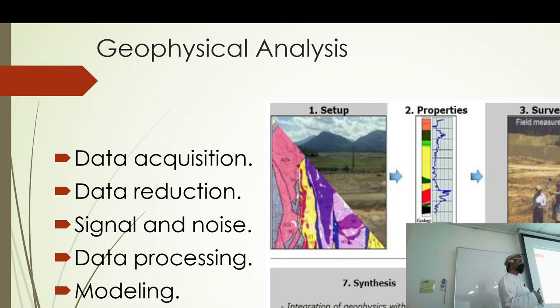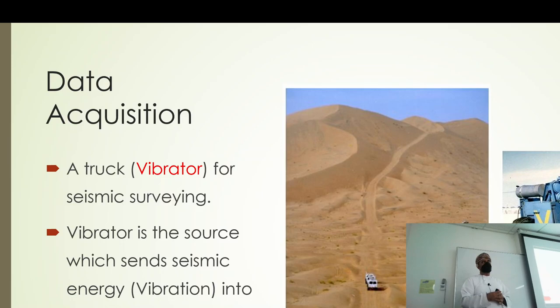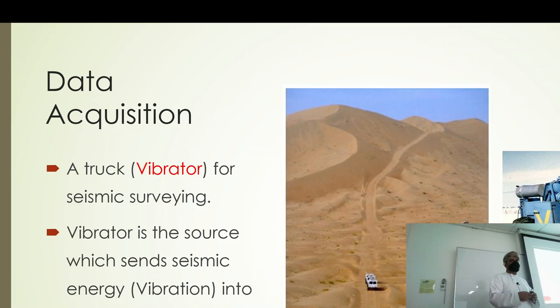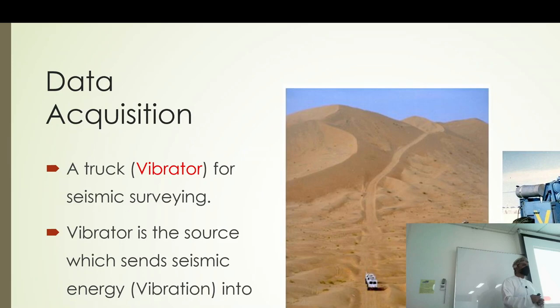Once you have made your plan, you know what you will do during fieldwork and how many points to acquire. Let's say we are doing oil exploration using multiple vibrators. A vibrator is a source in seismic exploration — it shakes the ground and sends seismic energy into the ground. Once there is an interface or change in physical property of the rocks, some part of the energy gets reflected back to the surface.